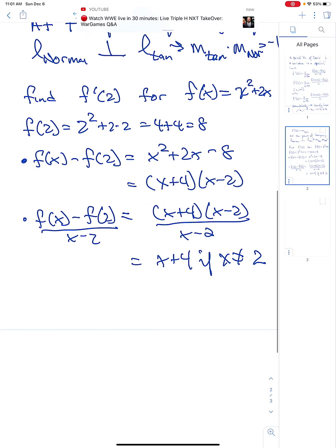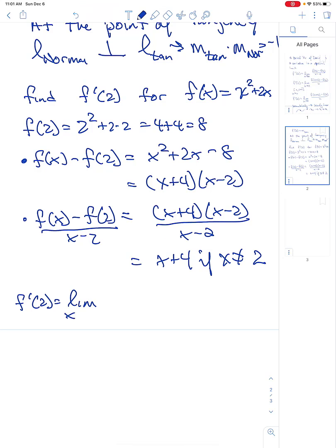And then from there, f prime of two, which is the limit as x goes to two of f of x minus f of two all over x minus two by the substitution property of equality.